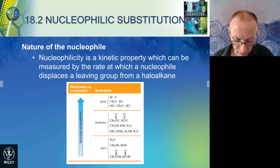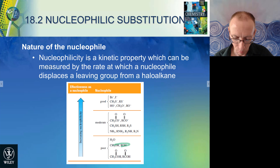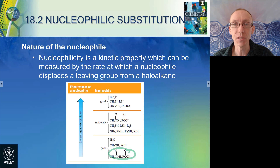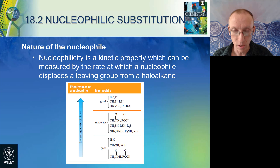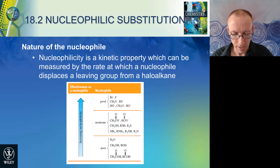Poor nucleophiles are things like water, which doesn't have a negative charge, alcohols, which are similar to water, and carboxylic acids, which also don't have a negative charge. Oxygen is quite electron withdrawing, so it likes to hold on to its lone pair of electrons and is not as likely to act as a nucleophile.